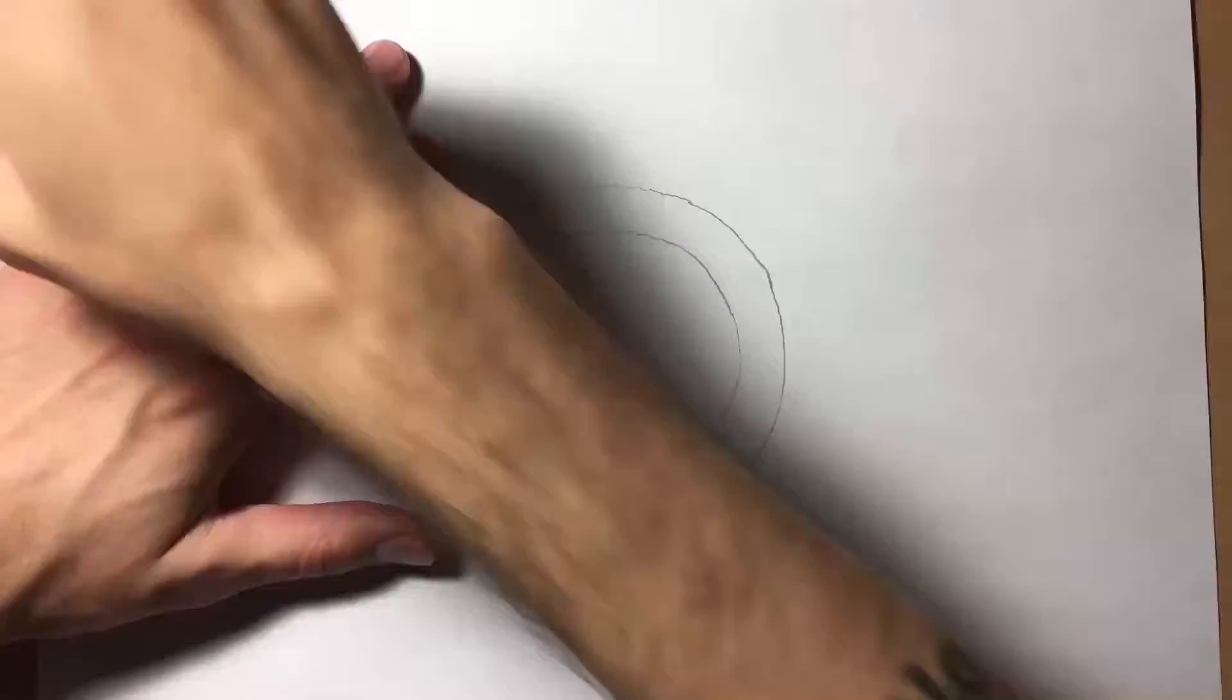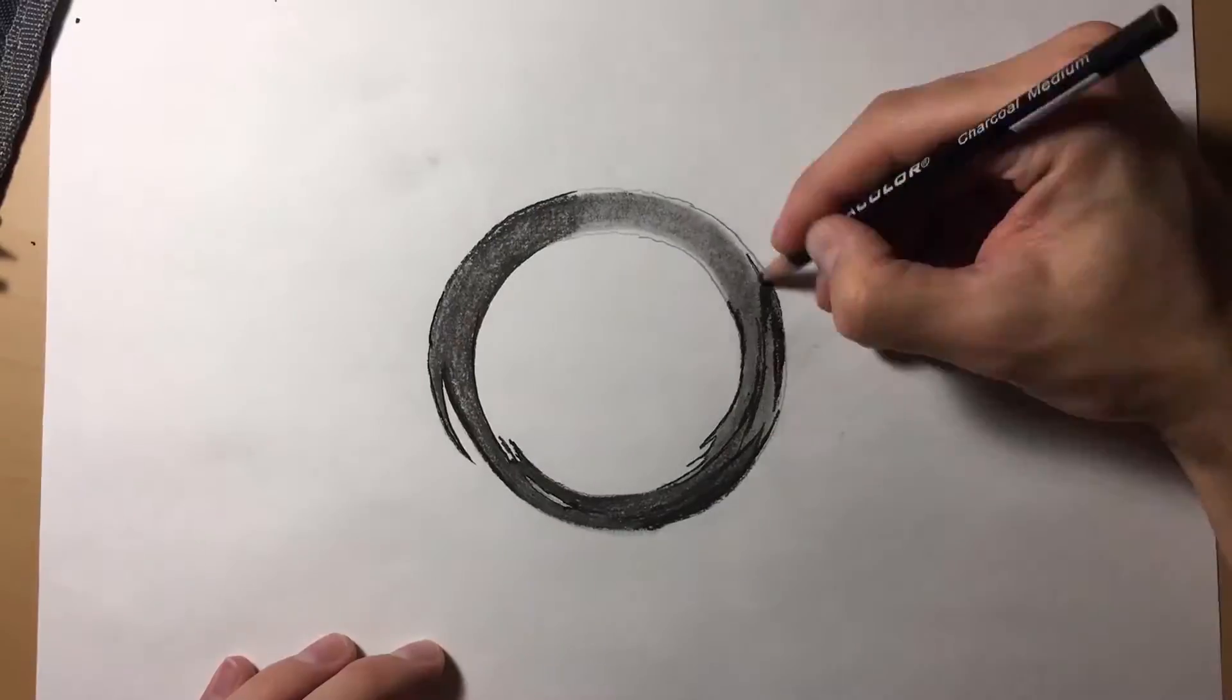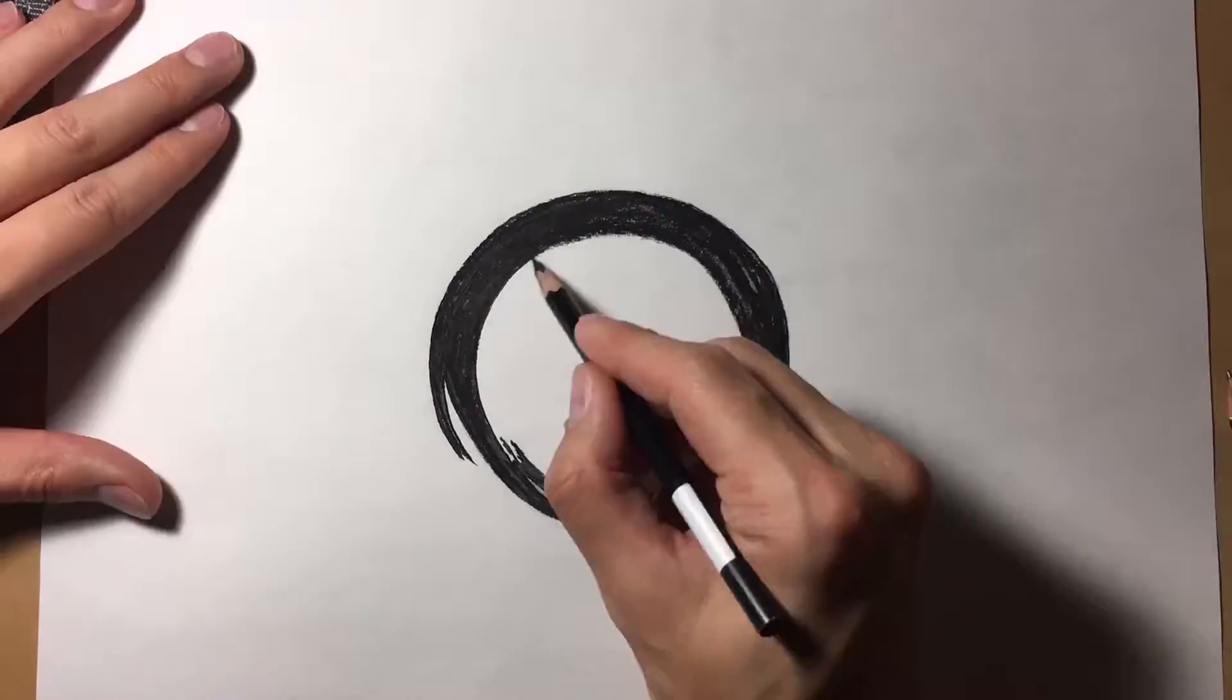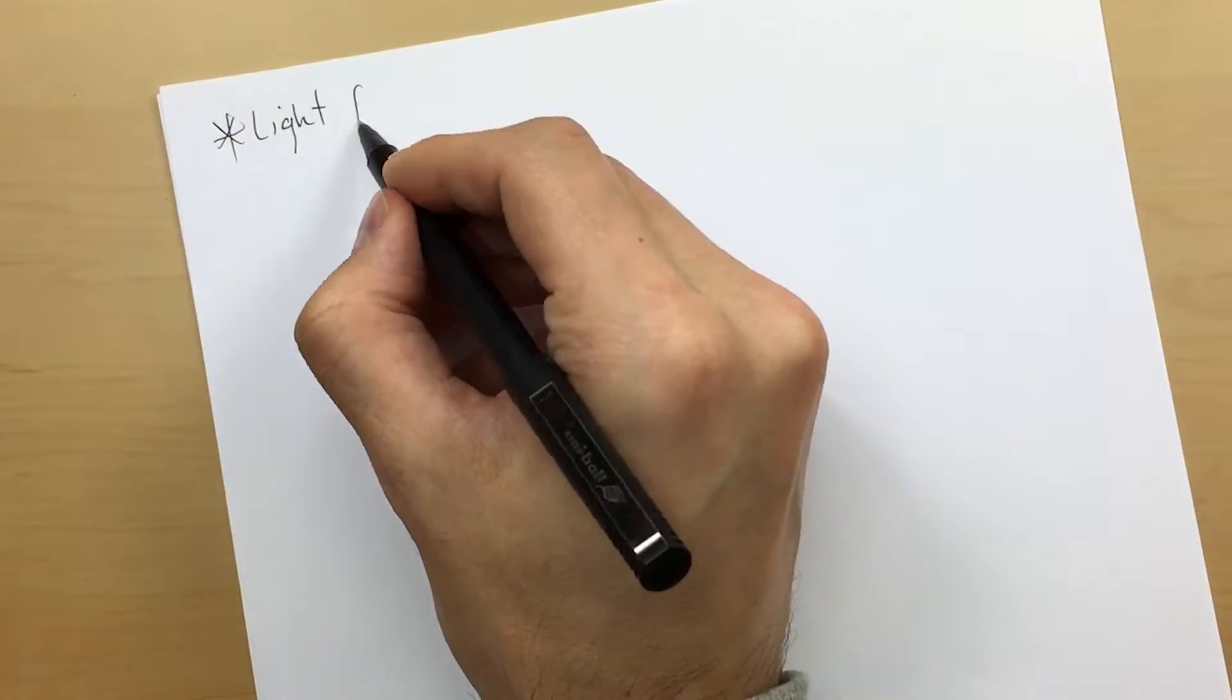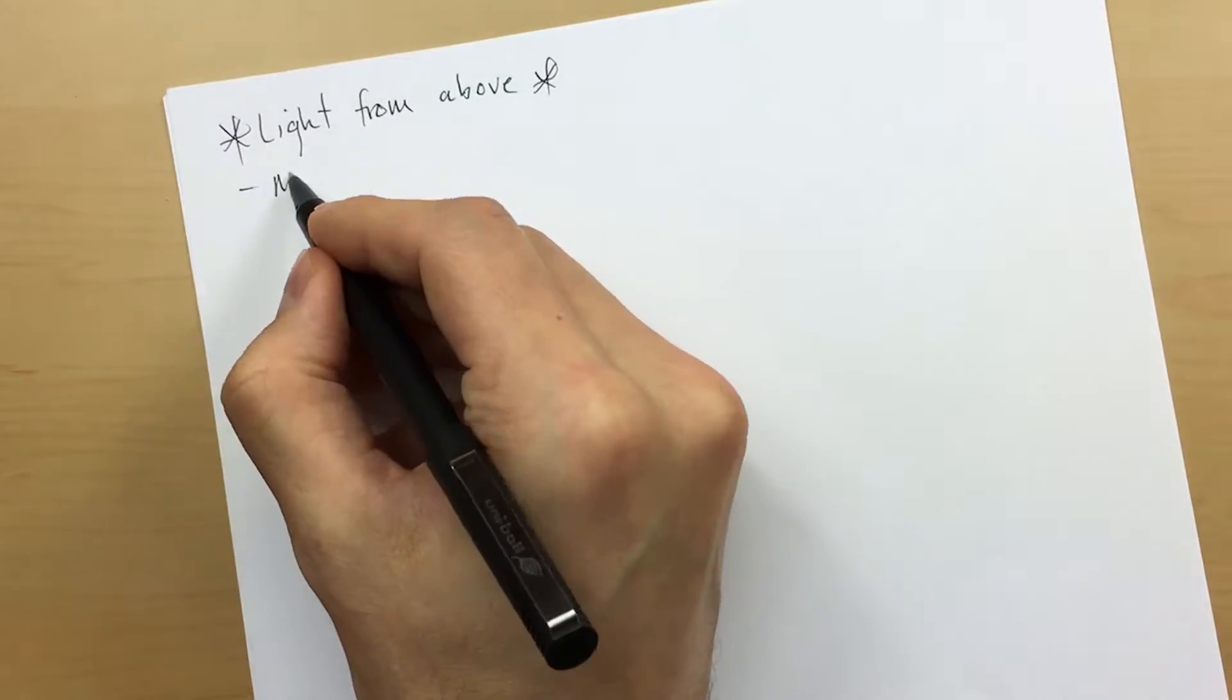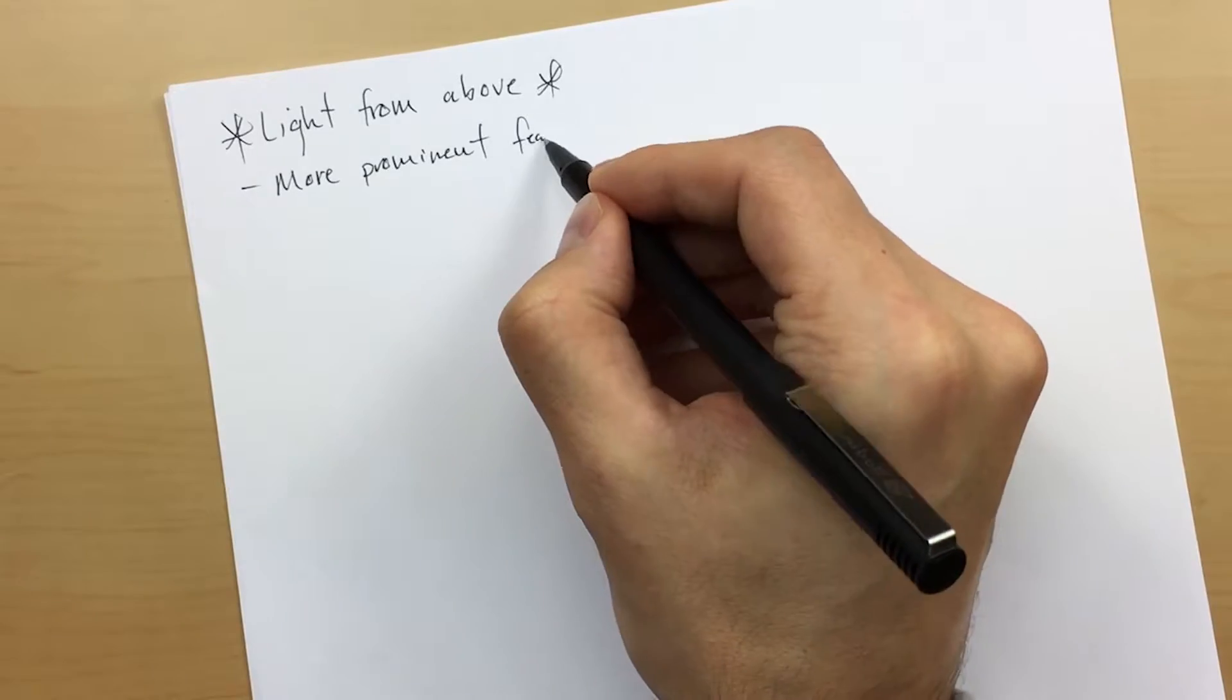Okay, now in this lesson we're going to be going over two different views: light from the side and light from above. But there are two main points that I want you guys to keep in mind as we progress through this lesson.